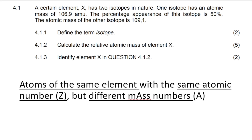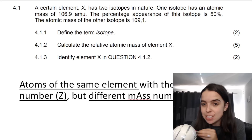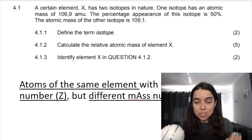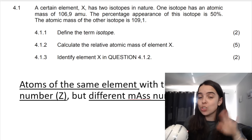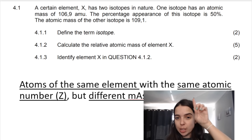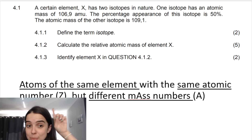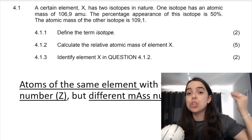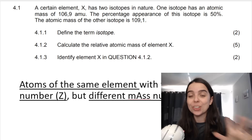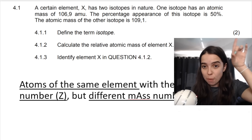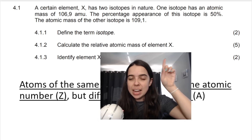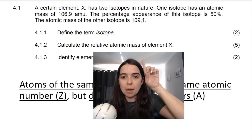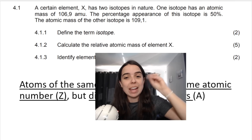The definition you need to learn is: isotopes are atoms of the same element — they have the same atomic number but different mass numbers. You can also say the number of protons is the same, which is why the atomic number is the same, but they have a different number of neutrons. That is your definition, worth two marks.